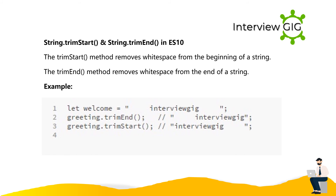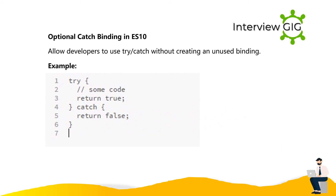String.trimStart and String.trimEnd in ES10: The trimStart method removes whitespace from the beginning of a string; the trimEnd method removes whitespace from the end of a string. Example: let greeting = '   interviewrig   '; greeting.trimEnd() removes trailing spaces; greeting.trimStart() removes leading spaces. Optional catch binding in ES10 allows developers to use try-catch without creating an unused binding. Example: try { someCode; return true; } catch { return false; }